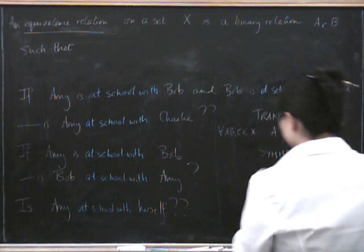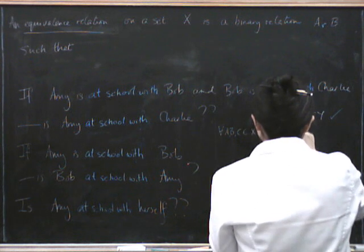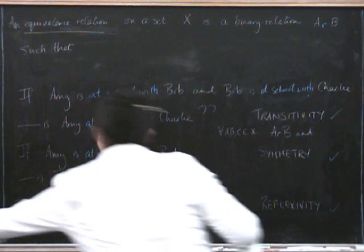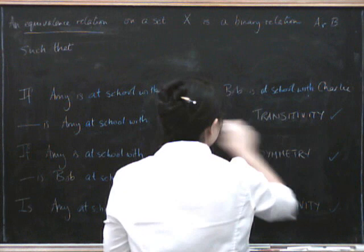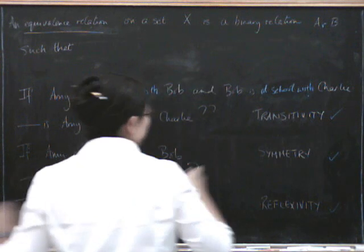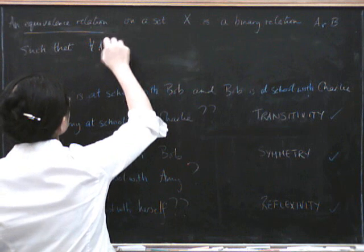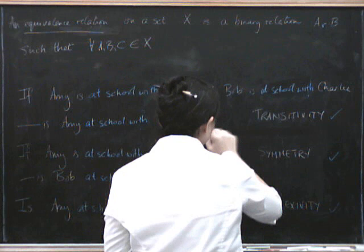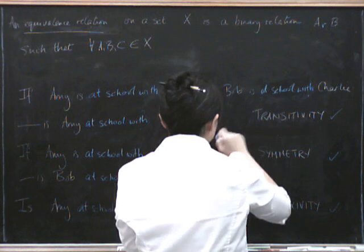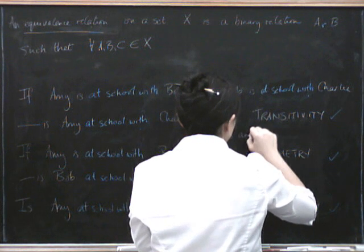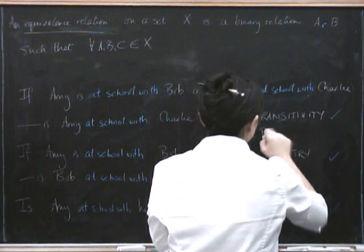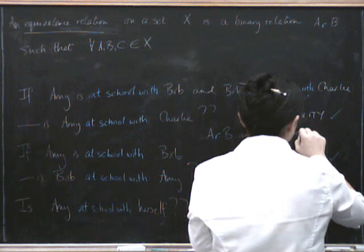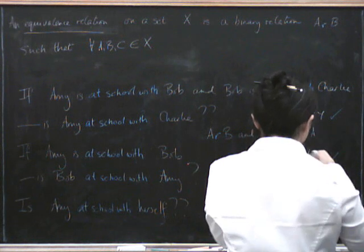If A is related to B and B is related to C, then A has to be related to C. For all A, B, and C in the set.